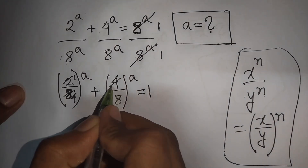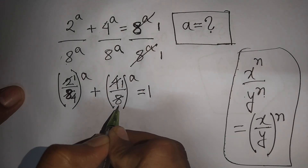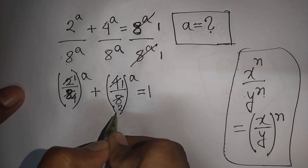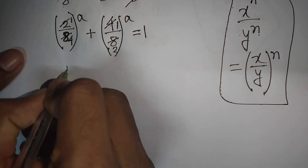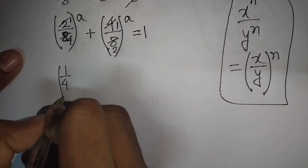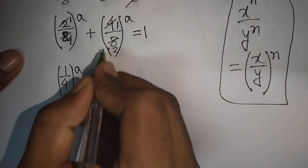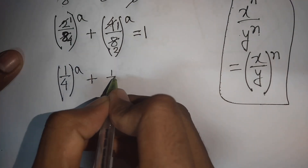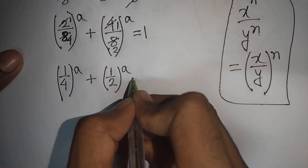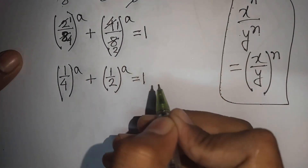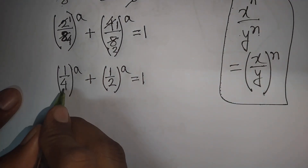Simplifying: 2 divided by 2 gives 1, 8 divided by 2 gives 4, and 4 divided by 4 gives 1, 8 divided by 4 gives 2. So we have (1/4)^a plus (1/2)^a is equal to 1.